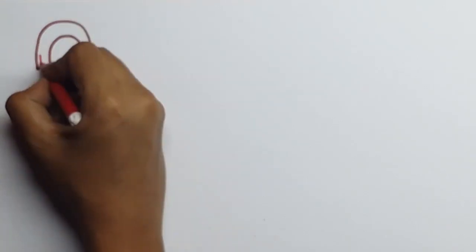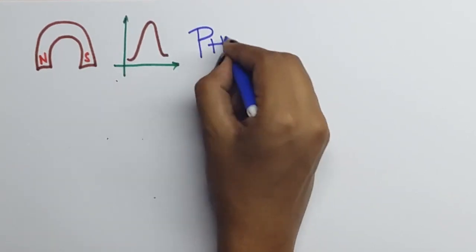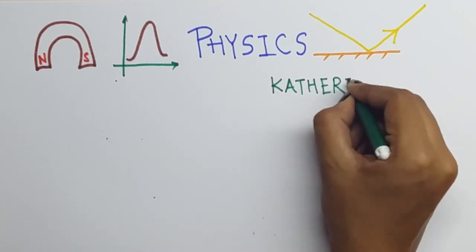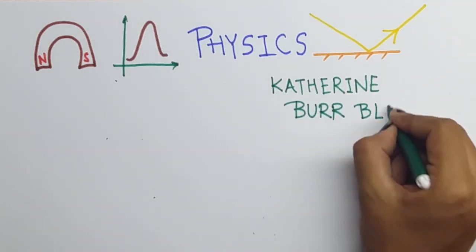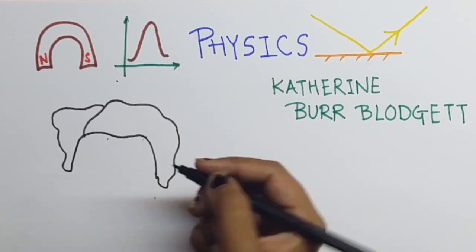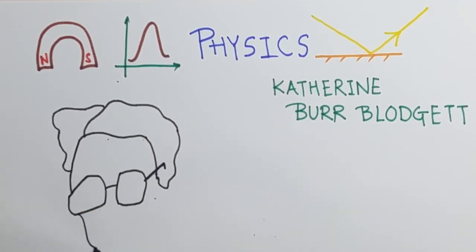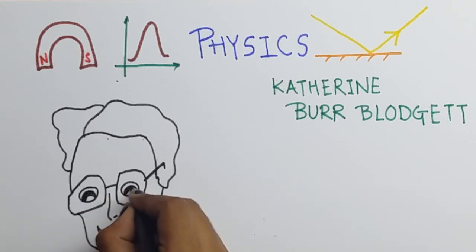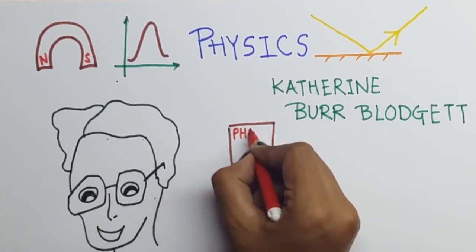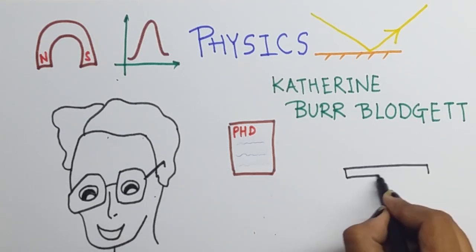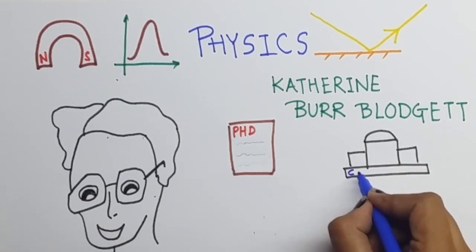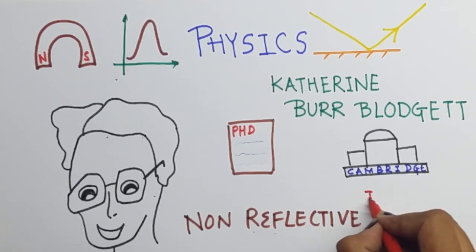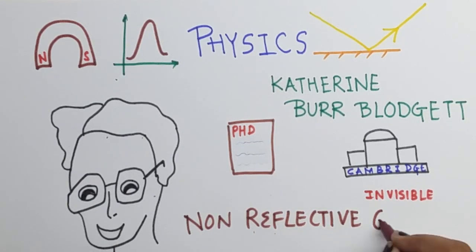Can you name any female physicist? Ever heard of Katherine Burr Blodgett? Katherine Burr Blodgett was an American physicist who was known popularly for her work in the field of surface chemistry. She was the first woman to ever receive a PhD in physics. She did that from Cambridge University. Her most famous work includes her invention of the invisible non-reflective glass, which was a pioneer for her field.